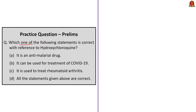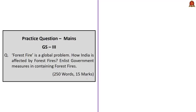The next question: Which of the following statements is correct with reference to hydroxychloroquine? (A) It is an anti-malarial drug; (B) It can be used for the treatment of COVID-19; (C) It is used to treat rheumatoid arthritis; (D) All the statements given above are correct. Hydroxychloroquine is an anti-malarial drug that can be used for treatment of rheumatoid arthritis and can also be used for the treatment of COVID-19. The correct answer is option D — all statements given above are correct.